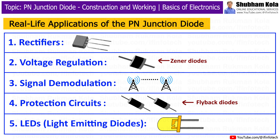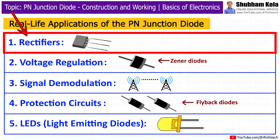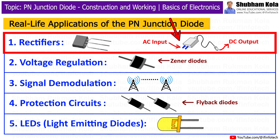Now we will see real-life applications of the P-N Junction Diode. The P-N Junction Diode is not just a theoretical concept — it is used in many practical applications. The first is Rectifiers: one of the most common uses of a diode is converting AC current to DC current, a process known as rectification. In devices like phone chargers, the AC from the wall circuit is converted into DC using diodes.